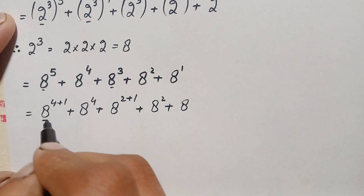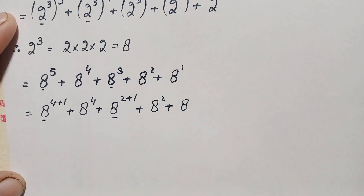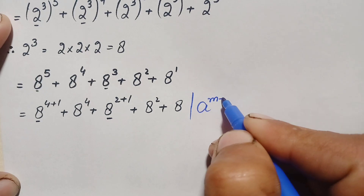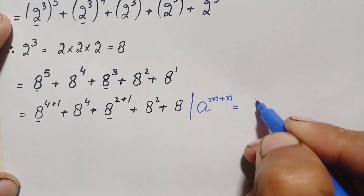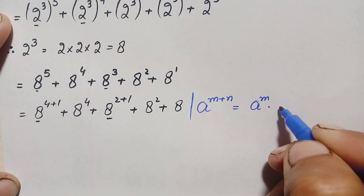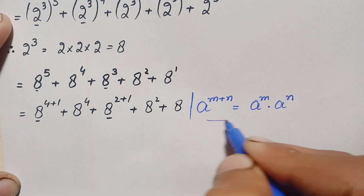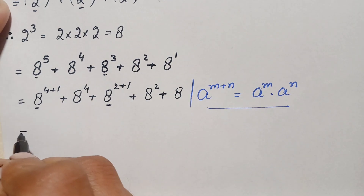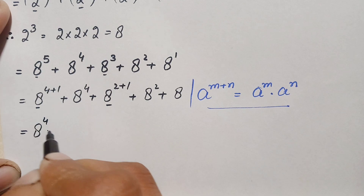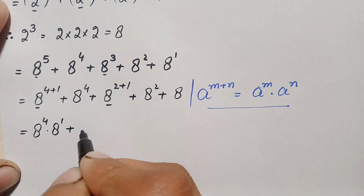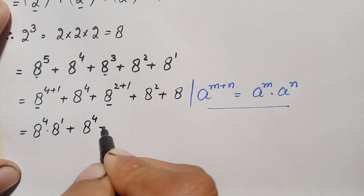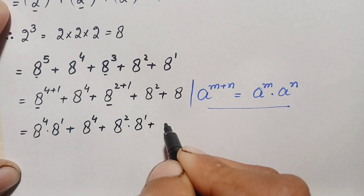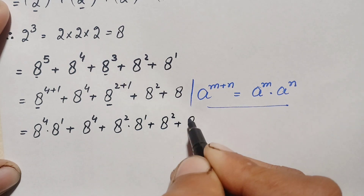Here we will use another exponential identity in these two terms: a raised to power m plus n can also be written as a raised to power m times a raised to power n. Using this identity, we rewrite: a raised to power 4 times a raised to power 1, plus a raised to power 4, plus a squared times a raised to power 1, plus a squared, plus a.